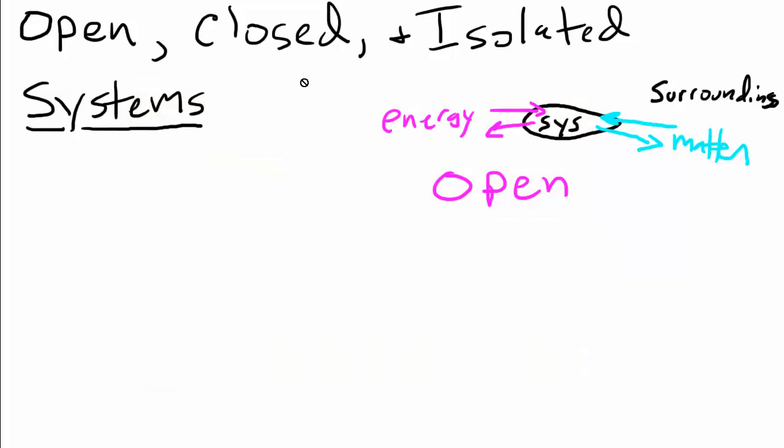So the next type we're going to look at then is called closed, a closed system, and it's very similar to an open system. There's only one difference. The energy can still go in and out; it's the matter that cannot go in and out. So if matter can't enter or leave a system, then it's called a closed system. An open system: both matter and energy can go in and out. In a closed system: only energy can go in and out.